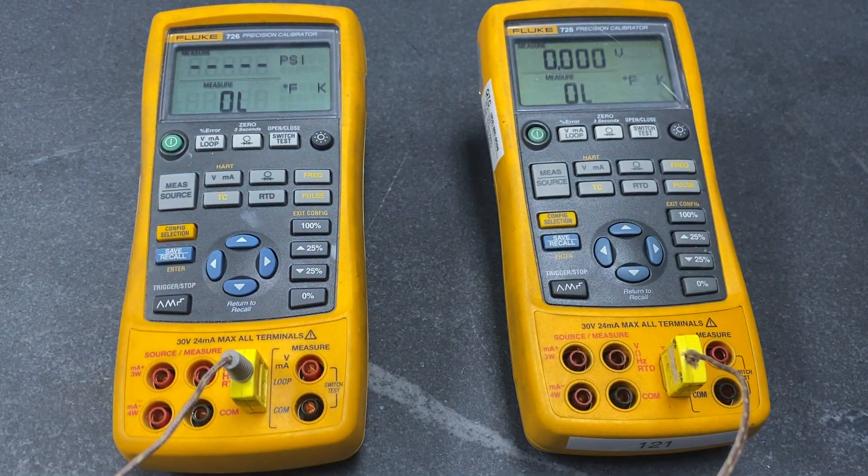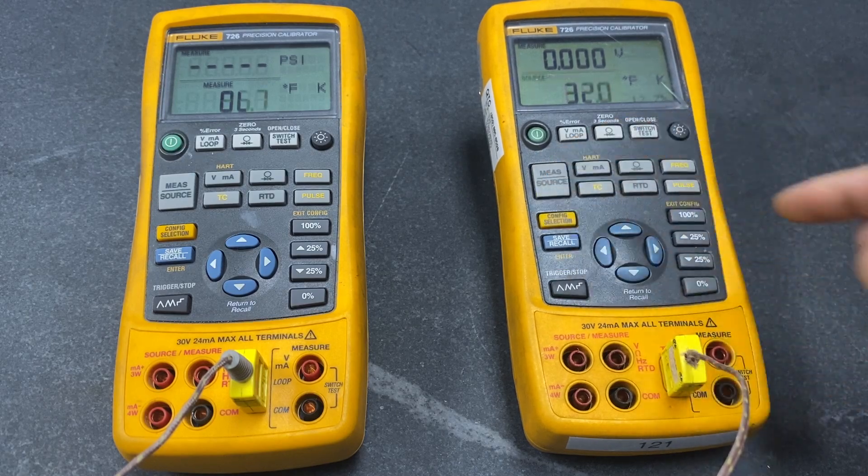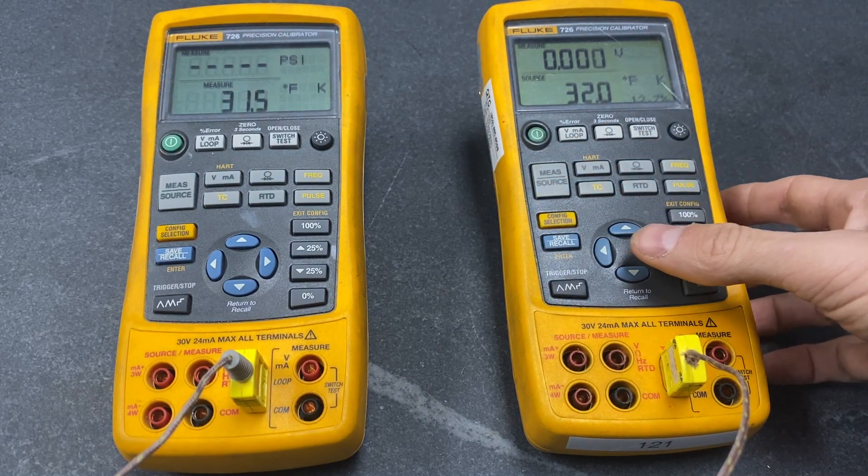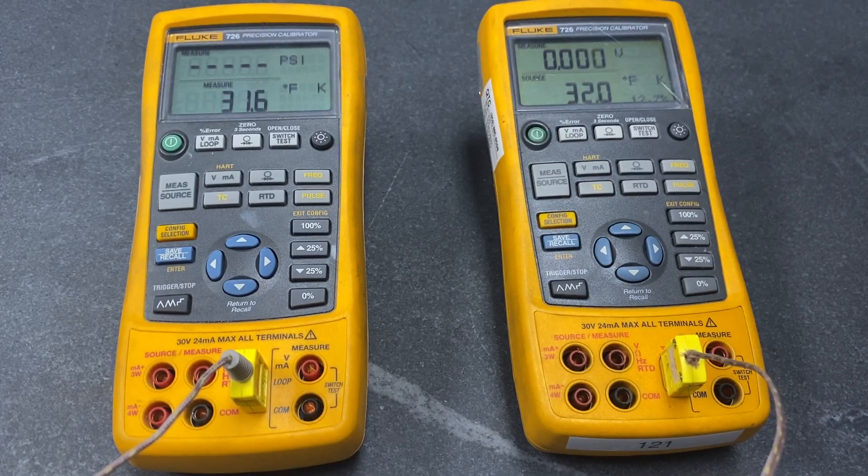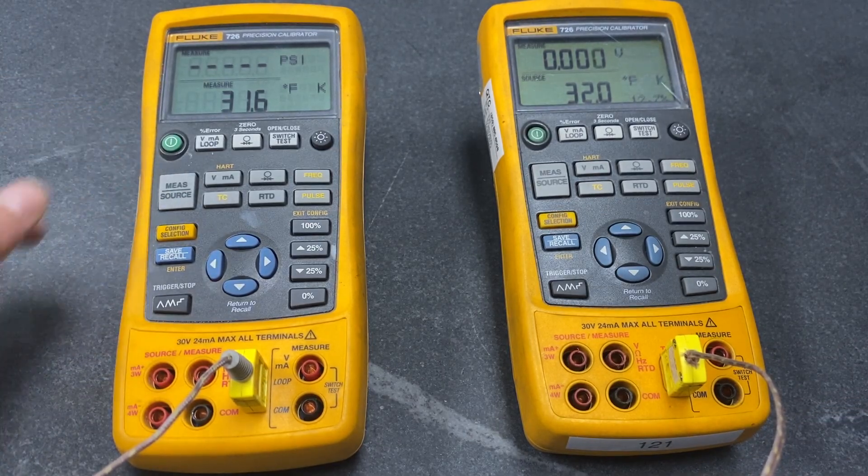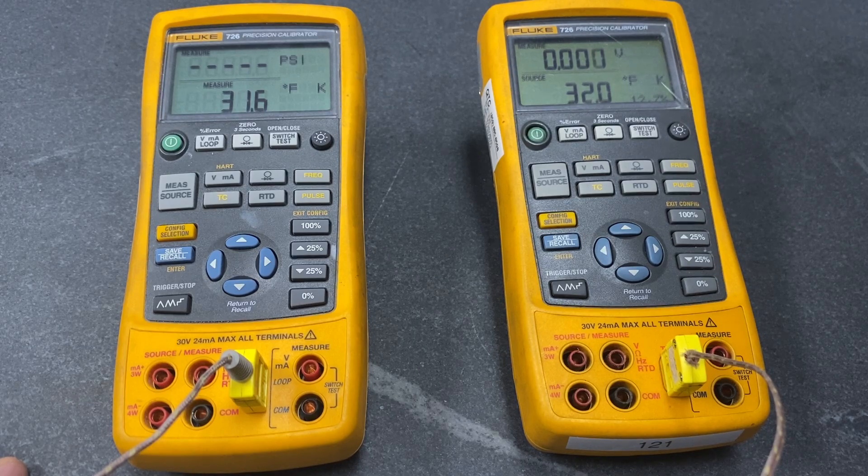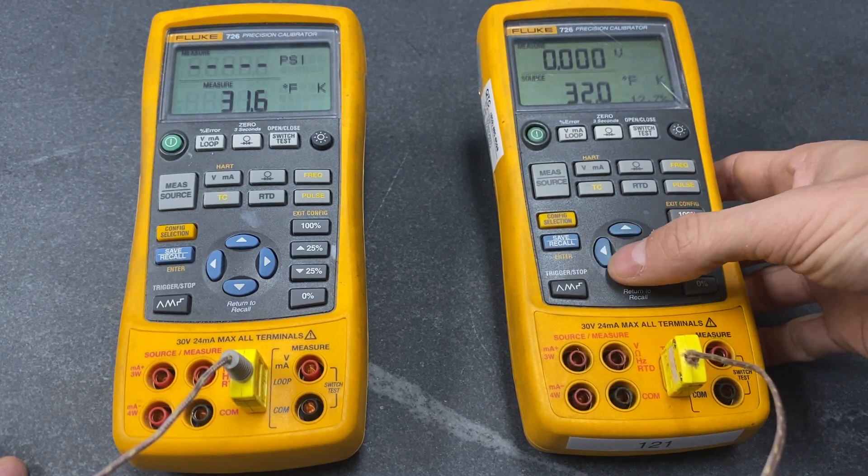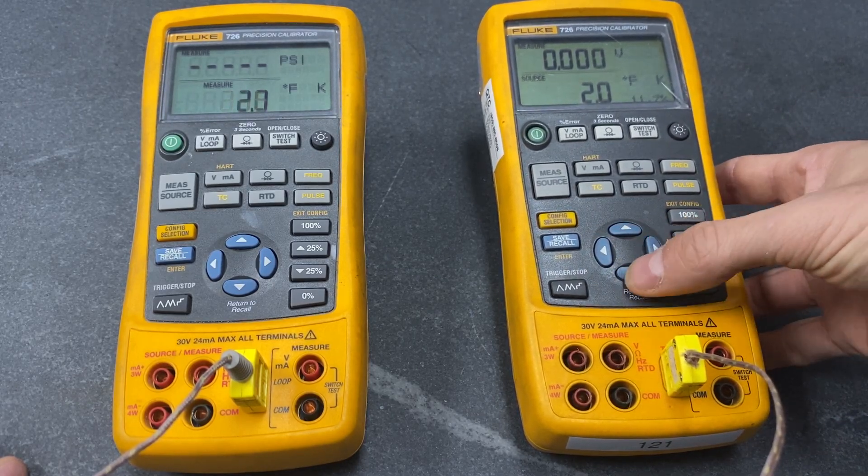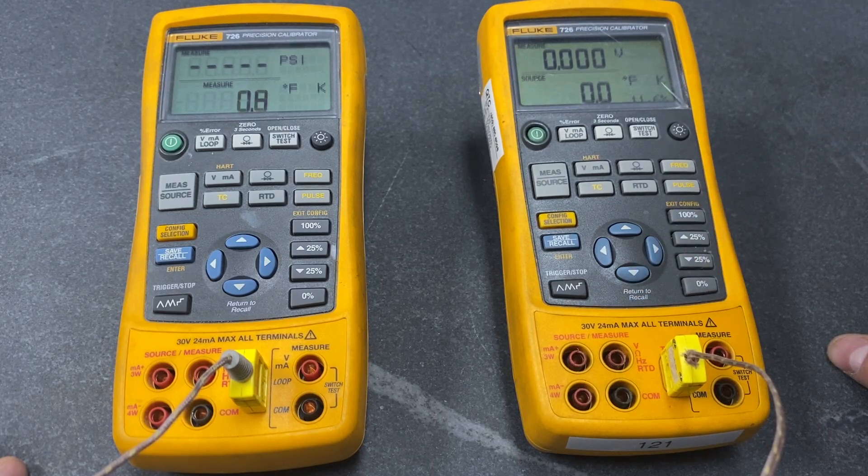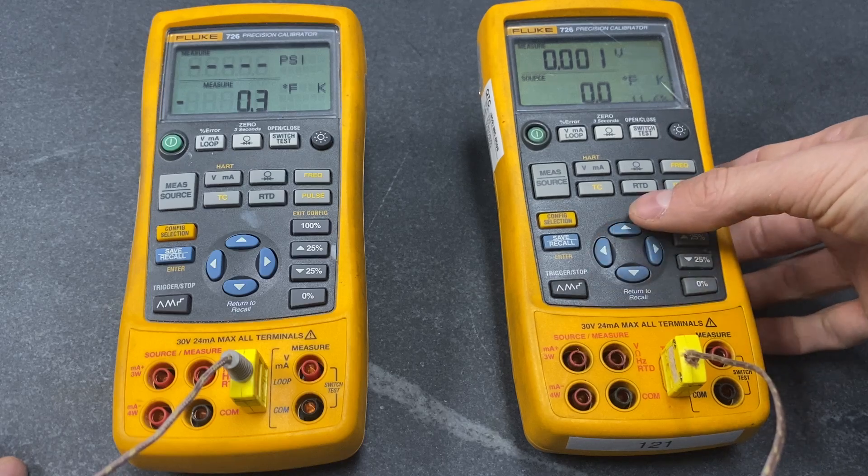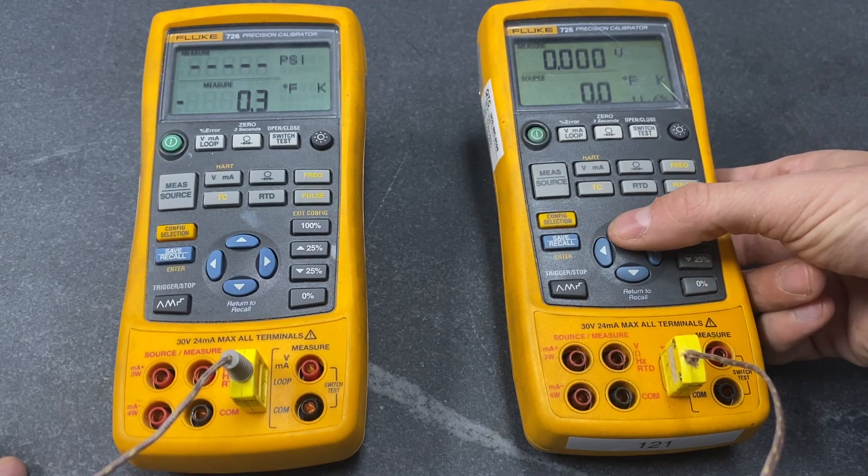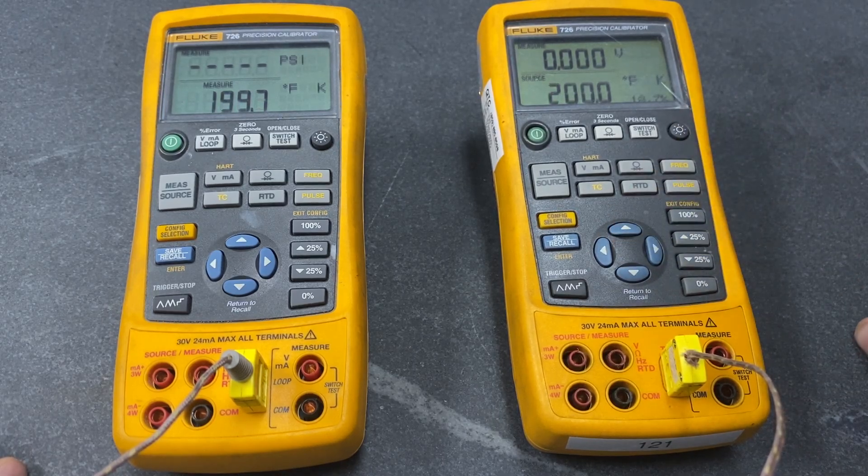To input, I'll set this one to source so that we are creating the thermocouple signal and it reads on the other. This is what a customer gauge would be like if we were calibrating their unit. I'll adjust the values accordingly, just showing the various test points we would do - maybe 100, 200, 300.